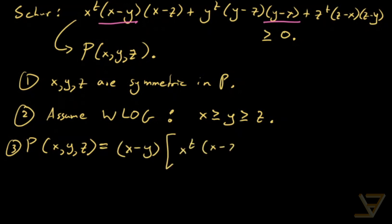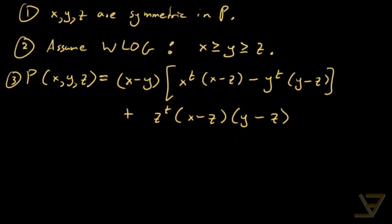plus z^t. And now we're going to reorder both of these two. So we get z^t(x-z)(y-z).